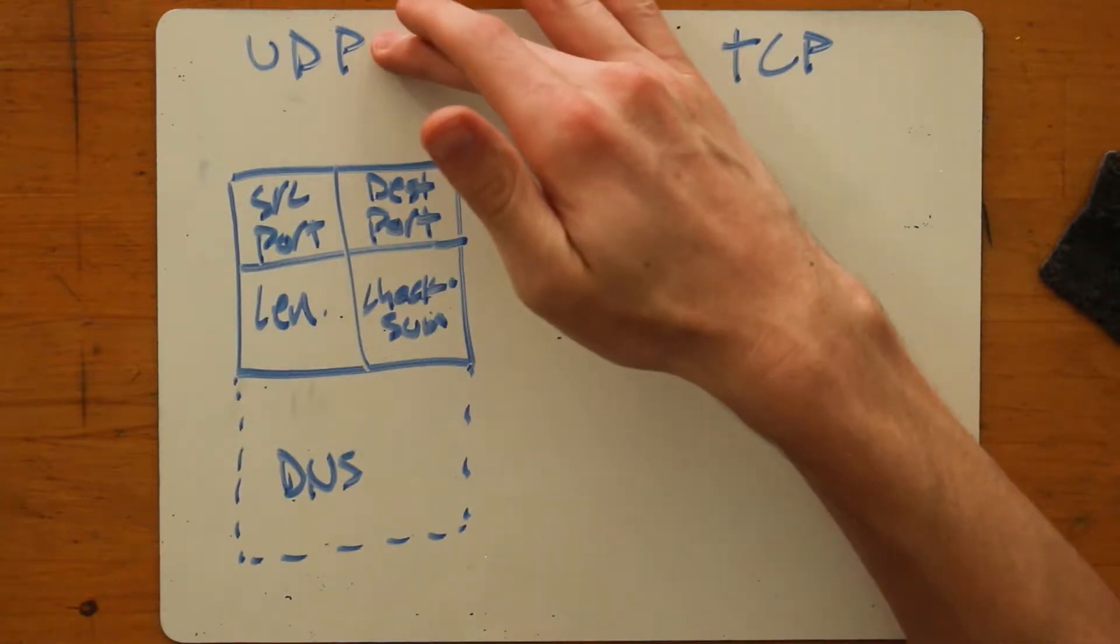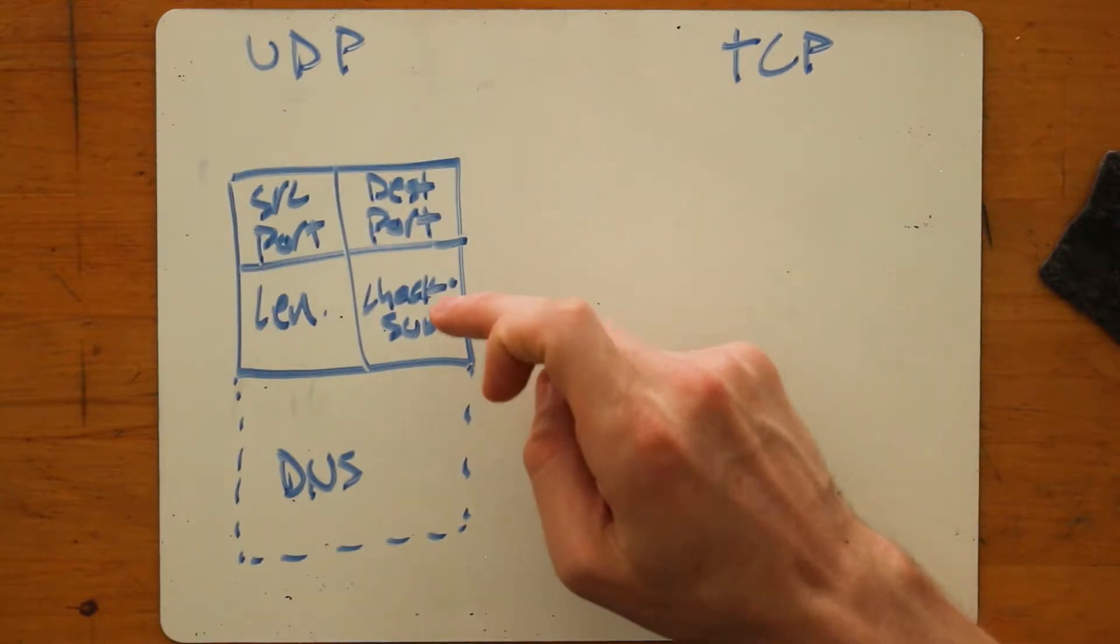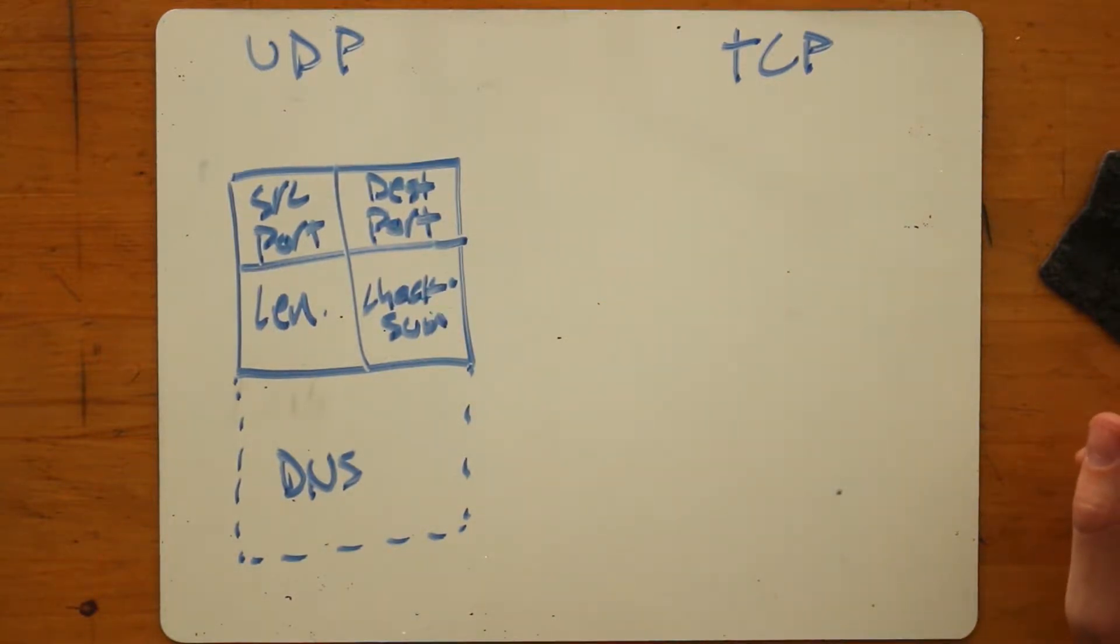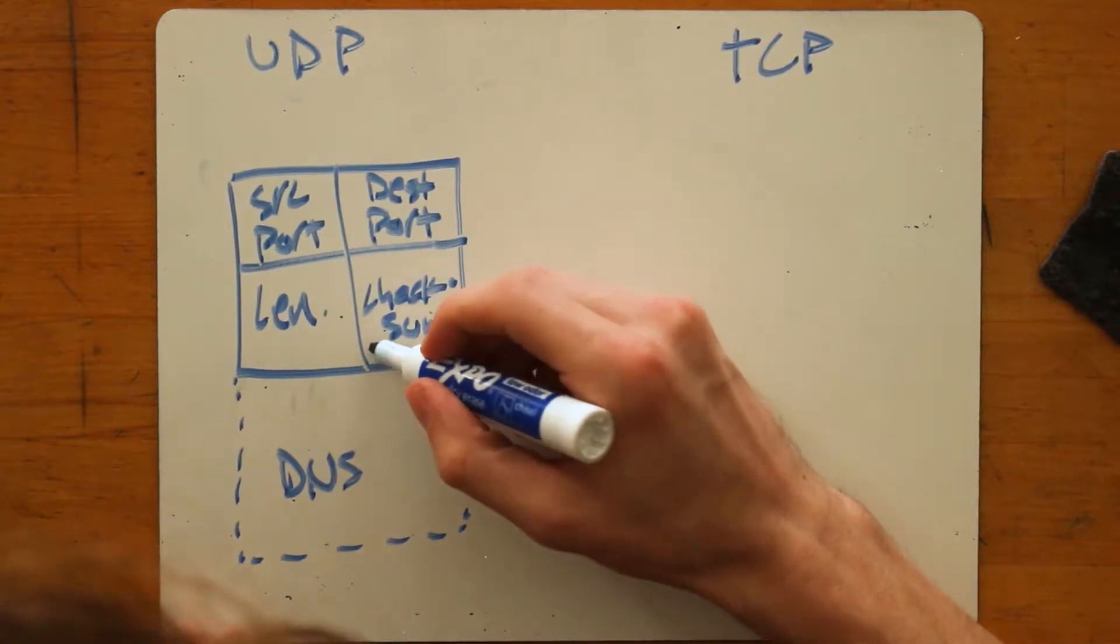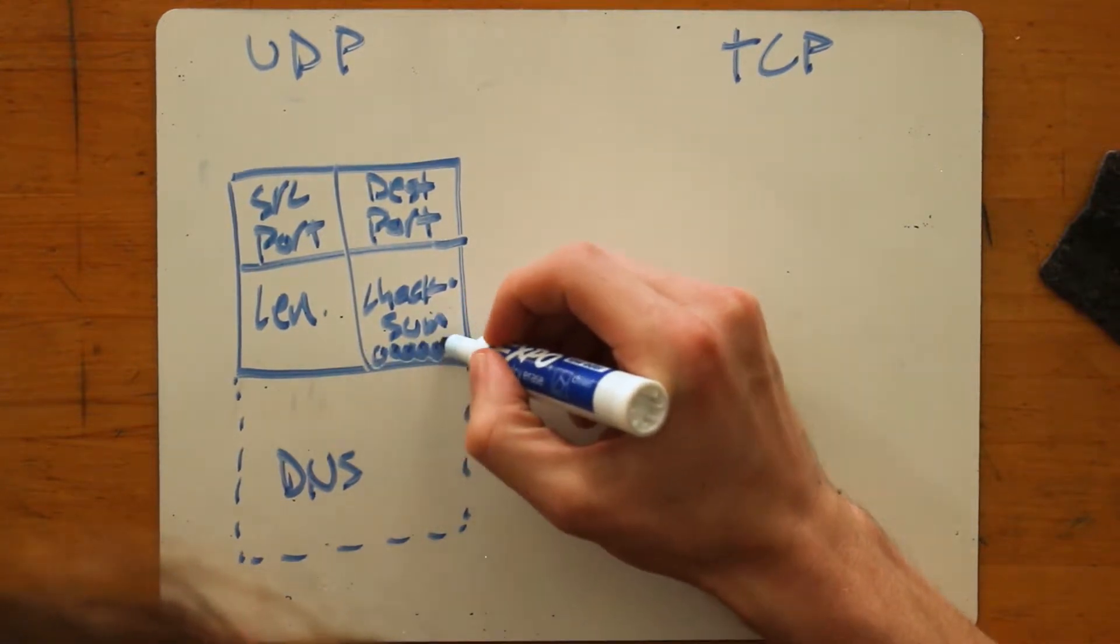But crucially, the UDP protocol does not require that this checksum field be filled in. It does specify an algorithm to use to compute that field, but it is allowed to be just zero, all zeros.